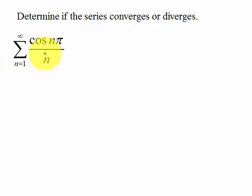And if n was 1, cosine of π is -1, and then if n was 2, cosine of 2π is 1, and if it was 3, cosine of 3π is -1.